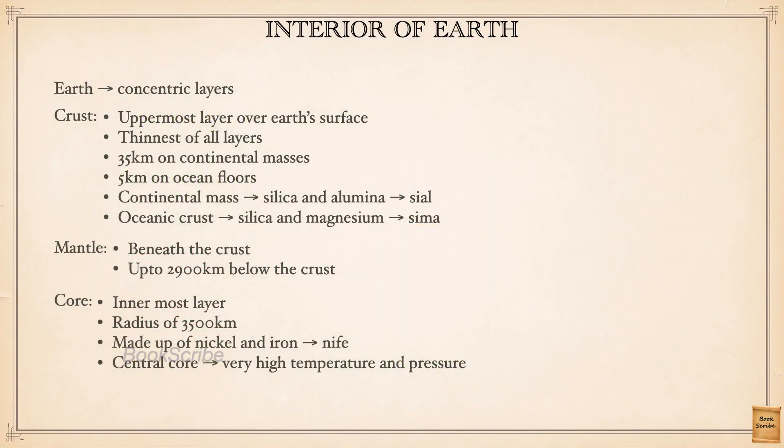Our planet Earth is a dynamic planet. That means it is not static — continuously there are changes either inside the planet or on the surface. On the surface we know what happens: we see rivers, volcanoes, earthquakes, tsunamis, rain, and living organisms.